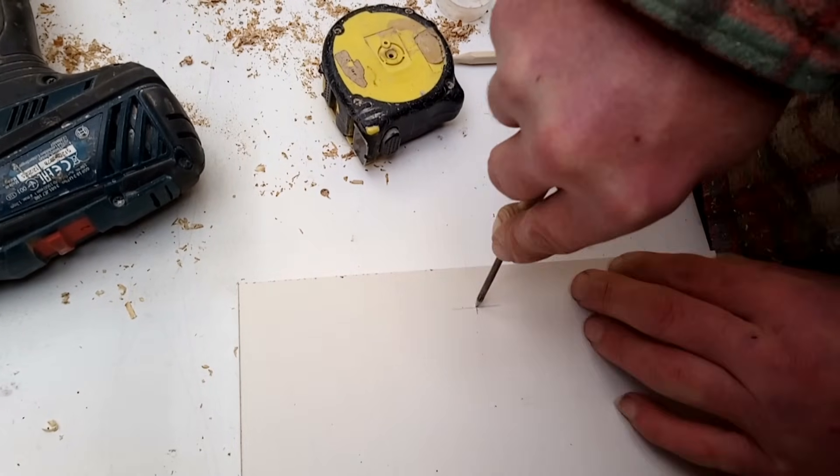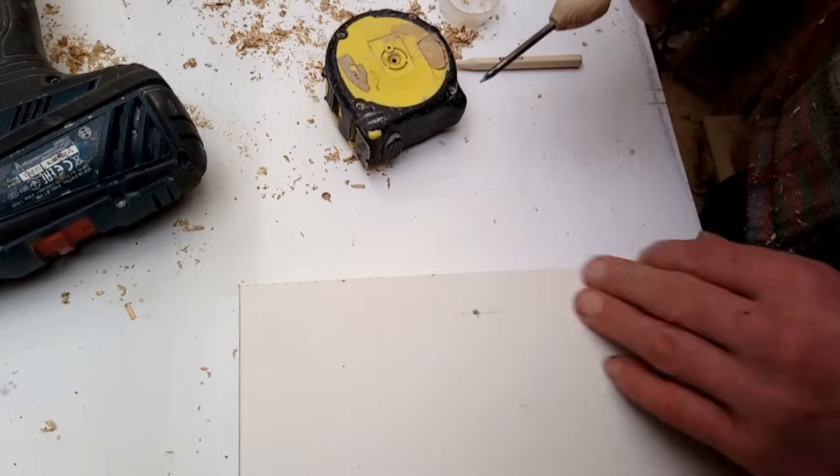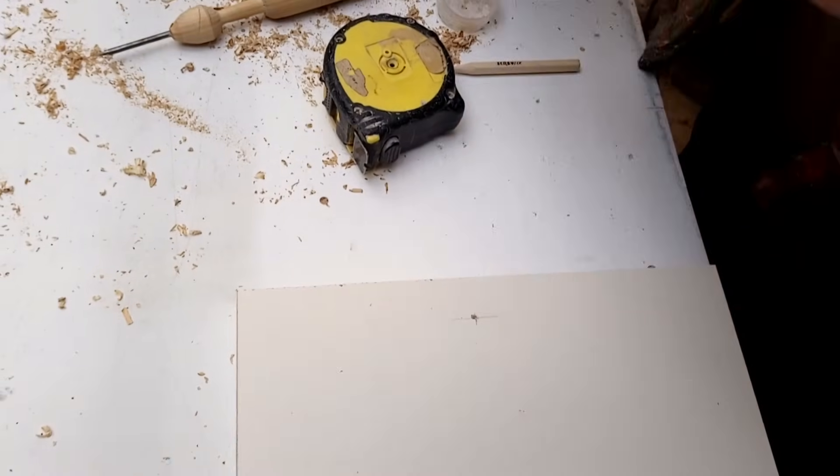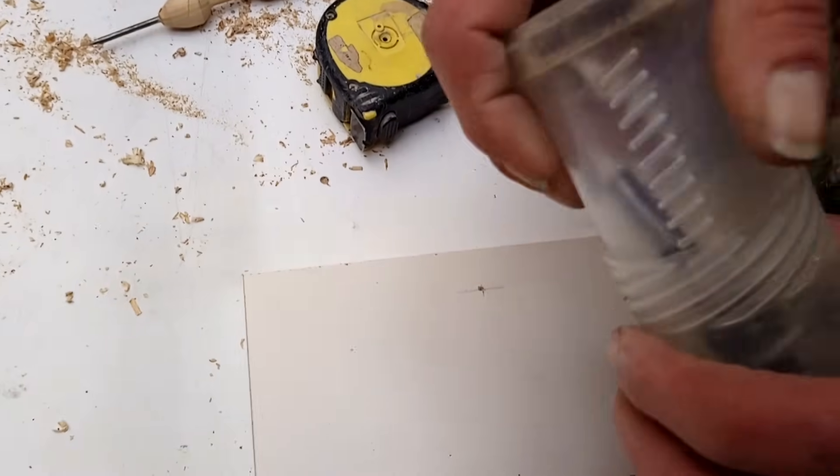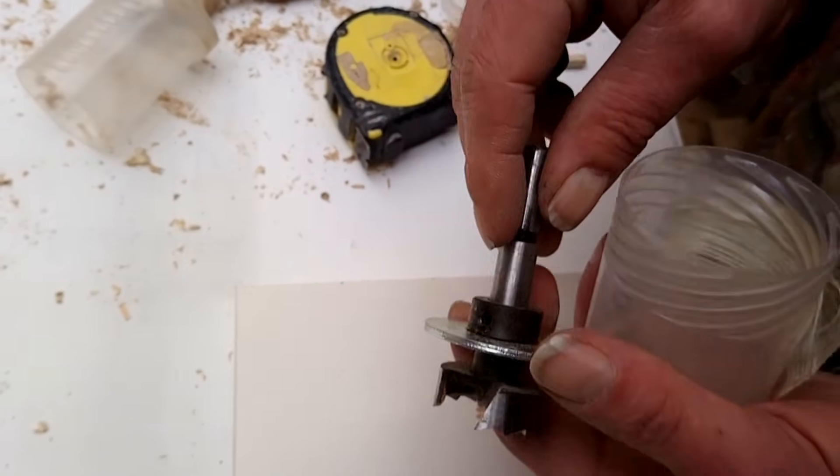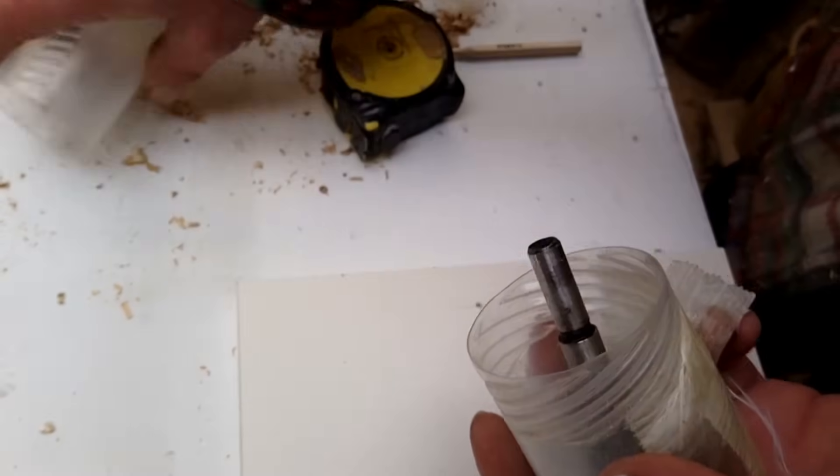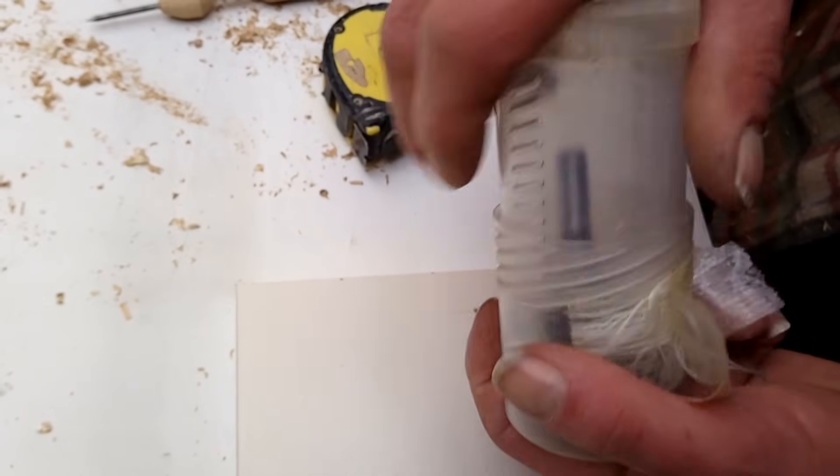Use a braddle or a pointy sharp thing to make a hole. And I've got this bit, it lives in the van. I think it came with a jig or something. I use it very rarely but it lives in there just as an emergency backup.